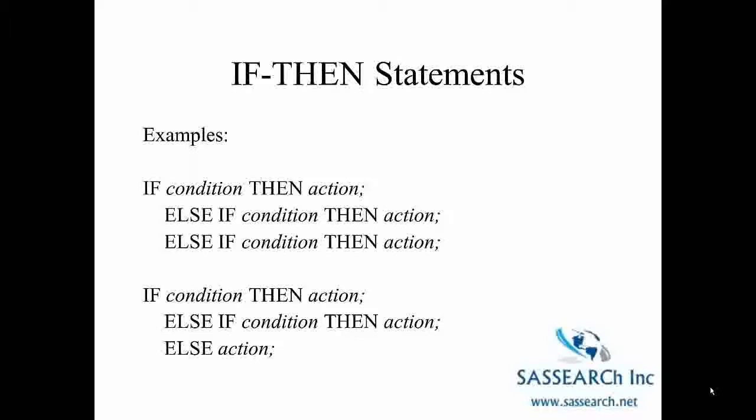We could say that if age is between 10 and 20, then age group equals 1. Our condition is that age be between 10 and 20, and the action is we're going to create a new variable, age group equals 1.